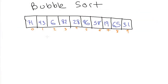The bubble sort algorithm works in multiple passes. In each pass, we begin on the left and compare the element we're currently on — right now the 71 — with the item to the right of it, which is the 43. If those two are out of order, we swap them. And these two are out of order: if we're sorting in ascending order, 43 should be to the left of 71, so we swap them like that.